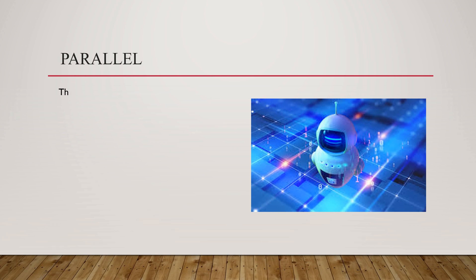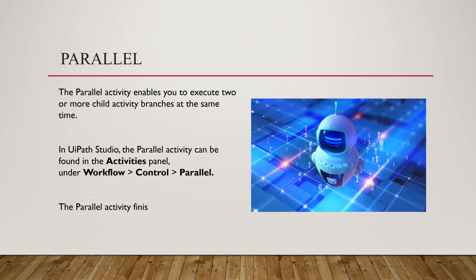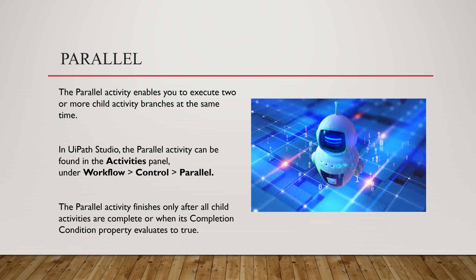Parallel. The parallel activity enables you to execute two or more child activity branches at the same time. In UiPath Studio, the parallel activity can be found in the activities panel under Workflow > Control > Parallel. The parallel activity finishes only after all child activities are completed, or when its completion condition property evaluates to true. When a set of activities needs to be executed in parallel at the same time, we use this parallel activity.